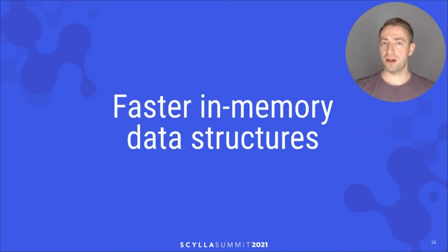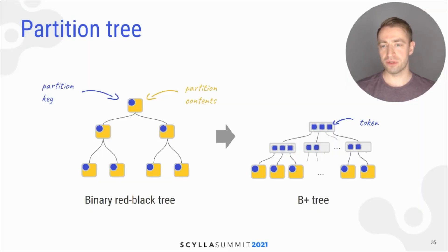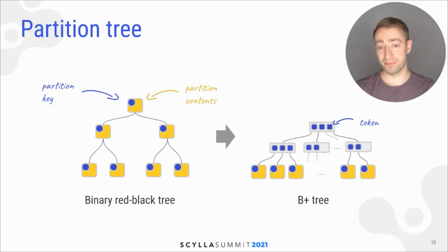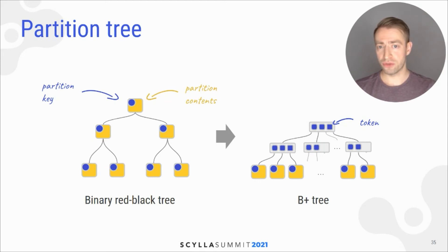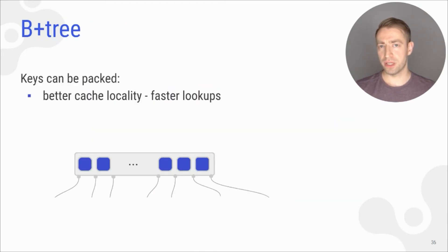We also now have faster in-memory data structures — the data structures used by memtables and cache to hold partitions in sorted order. This data structure changed from a binary red-black tree to a B-tree. This allowed us to pack keys more densely and improve cache locality, which gives faster lookups.